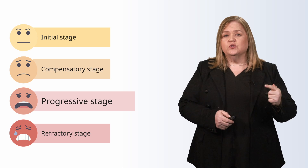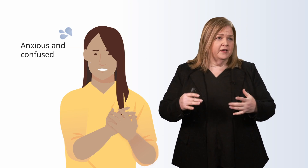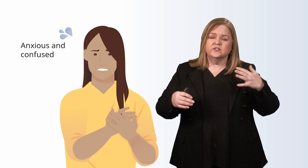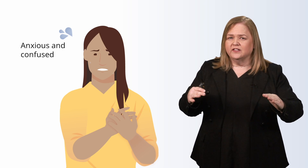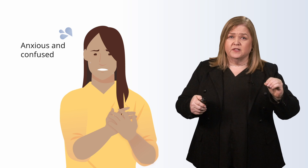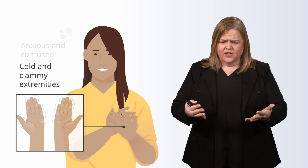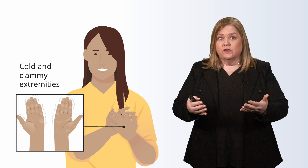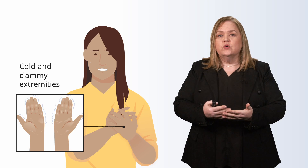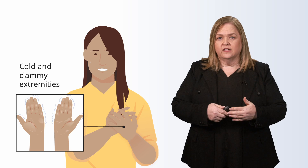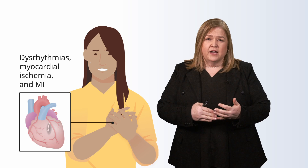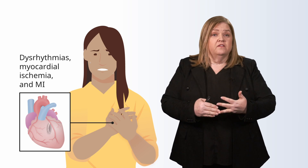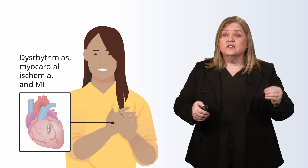Now we're moving into the progressive stage. This patient is starting to become anxious and confused — they're not perfusing their brains well. They have hypoperfusion in their central nervous system, making them very anxious and confused. It's their body's way of saying they're going to die if something drastic isn't done. Their hands, which before were pale, are now cold and clammy — there's no circulation getting to those hands. They can start to have dysrhythmias. This patient is in extreme danger and could have myocardial ischemia or even a myocardial infarction.